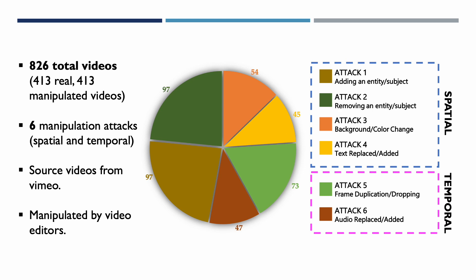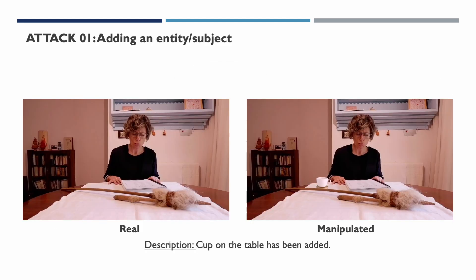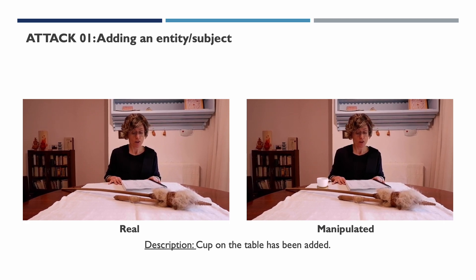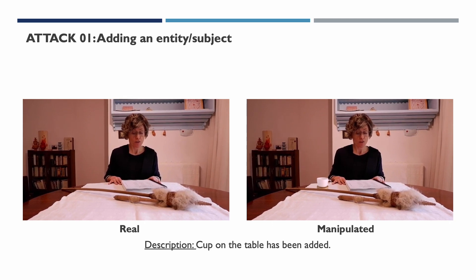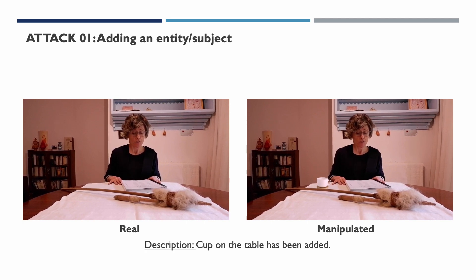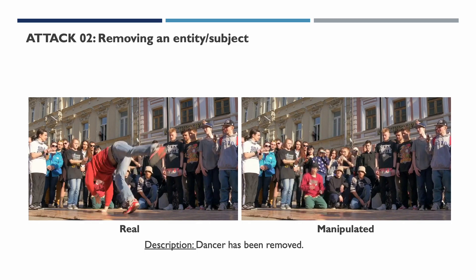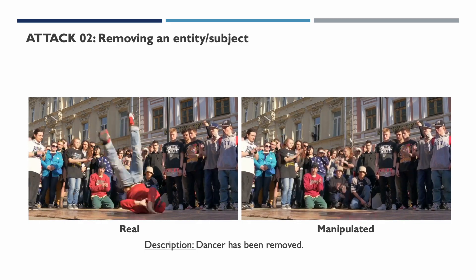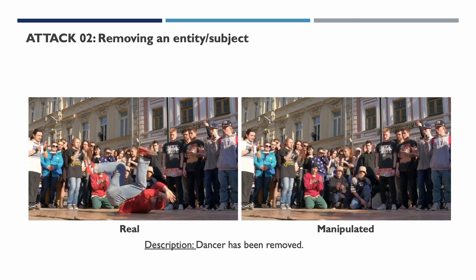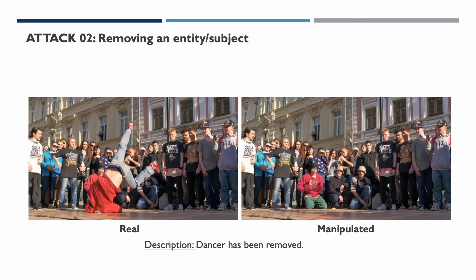We now introduce the six manipulation attacks used, along with an example of each. The first attack is adding an entity or subject. On the left we show the real video and on the right the manipulated video — in this example, we have added a white cup on the table. The second attack is the exact opposite: removing an entity or subject from the video. In this example, we have removed the dancer in the center.